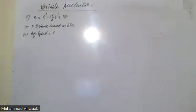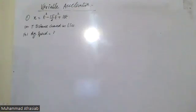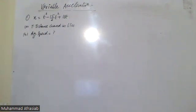We know one thing: whenever they give us the displacement or the velocity for any equation with variable acceleration, you first have to find out the velocity, whether they ask or they don't ask. You find out the velocity and then put velocity equal to zero to find out the timings where the particle either turns or doesn't turn.